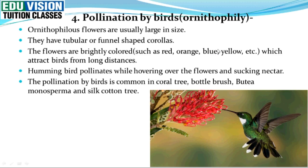Next is pollination by birds. This process is called ornithophily. Ornithophilous flowers are very large and brightly colored, like red, orange, blue, and yellow. The flowers are visible and have a tubular shape.